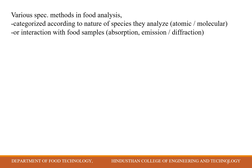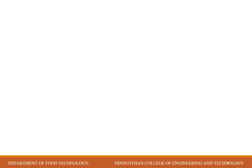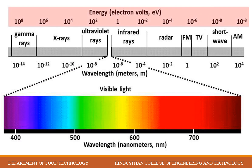Various spectroscopic methods in food analysis are mostly categorized by the nature of species they analyze — either at the atomic level or the molecular level — or by the interaction of light with the sample. Electromagnetic radiation spans different wavelength regions, including ultraviolet rays, X-rays, gamma rays, infrared rays, and the visible light region.